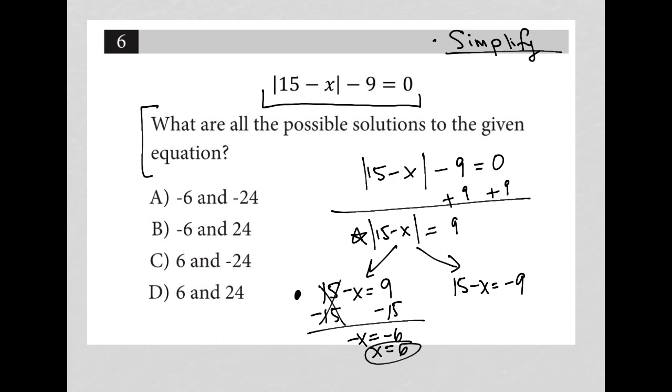And then here, the same thing. Subtract 15 on both sides. That's gone. I'm left with negative x is equal to negative 24, which means positive x is equal to positive 24.